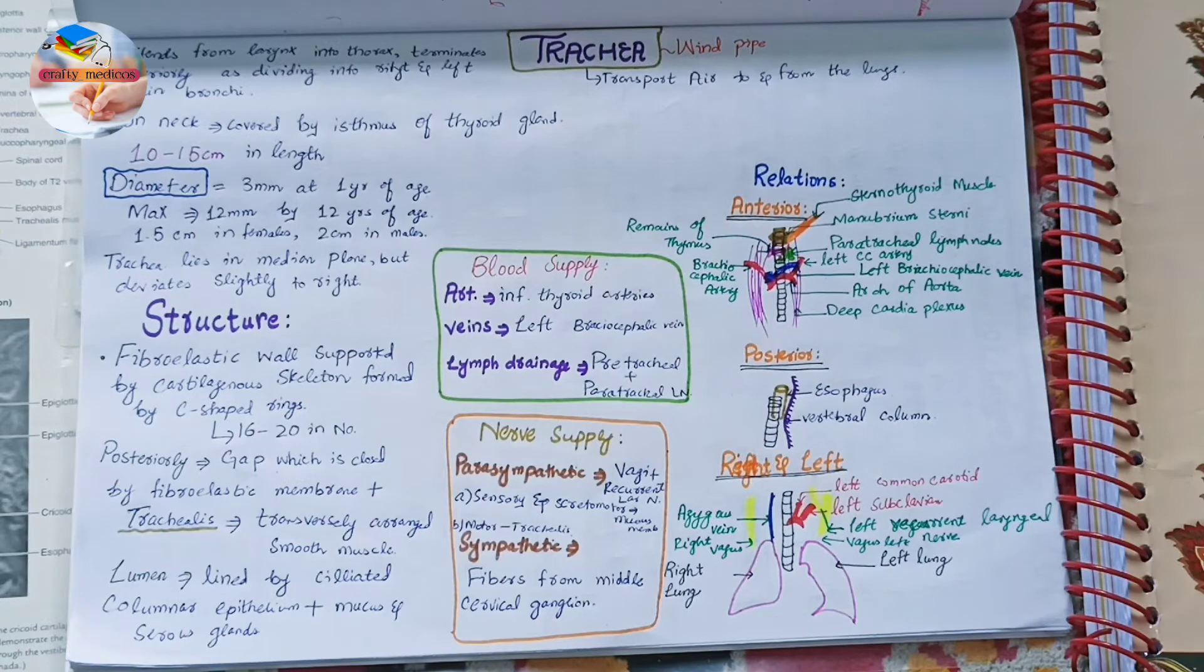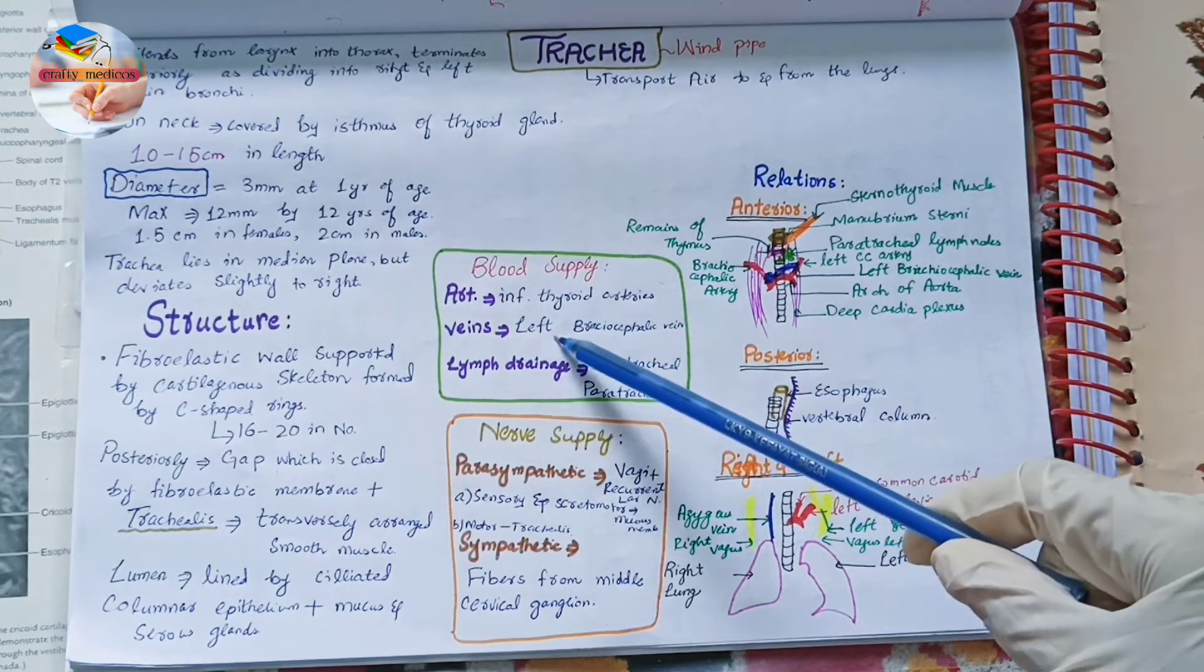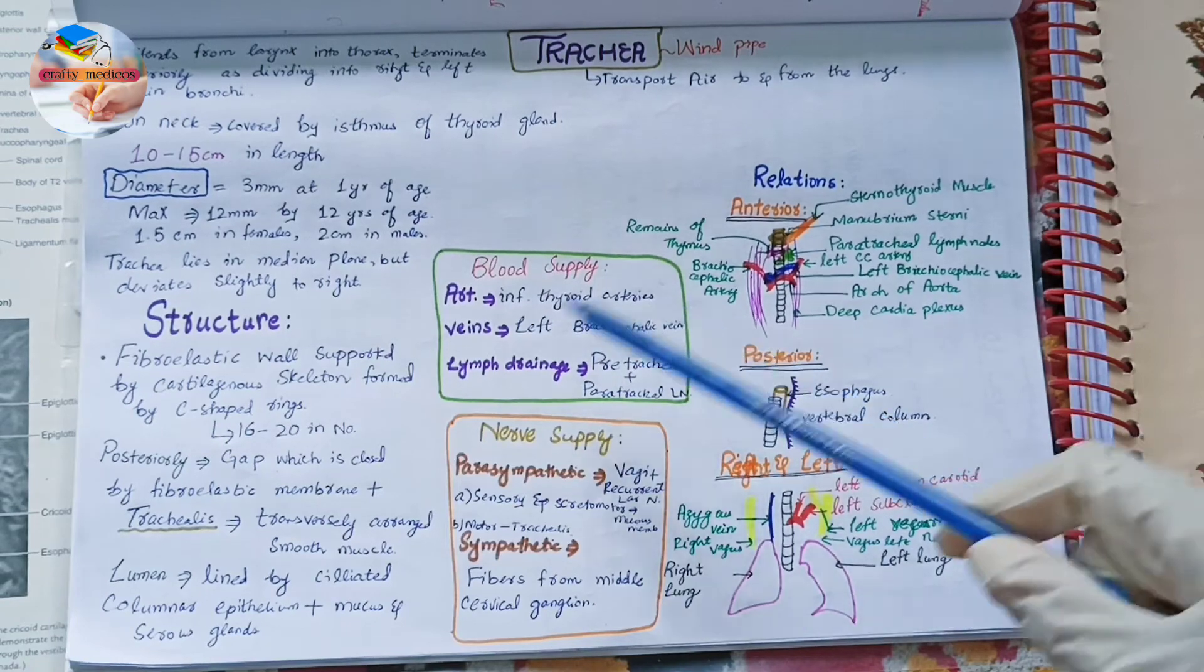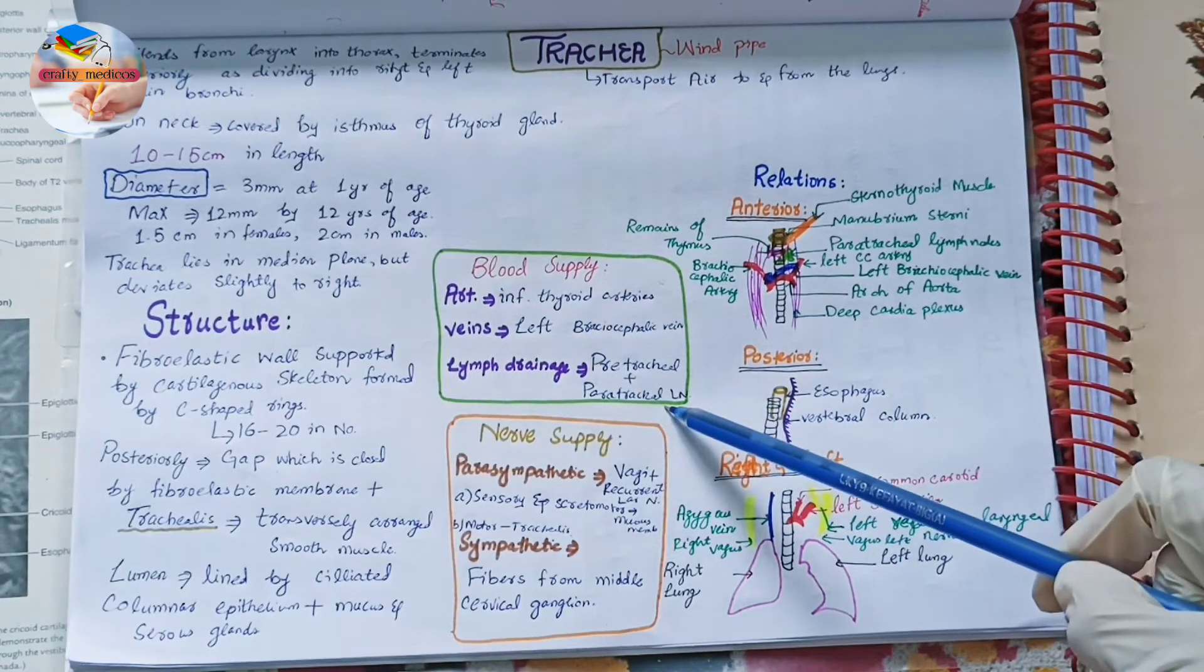The blood supply and lymphatic drainage: it is supplied by the inferior thyroid arteries and venous drainage is through the left brachiocephalic vein. Lymphatic drainage of trachea is by the pre-tracheal lymph nodes and the paratracheal lymph nodes.